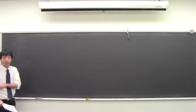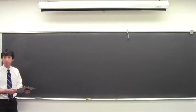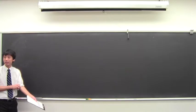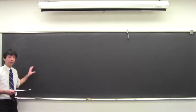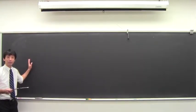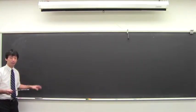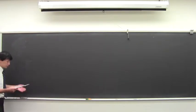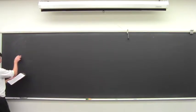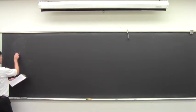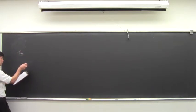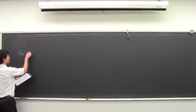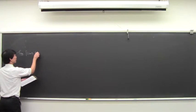Remember what we were doing last time — we stopped. We were talking about limits, and we sort of gave this definition with epsilons and deltas, and then we started talking about some properties of limits. One that I think we closed on was this one, which we call limits and arithmetic.